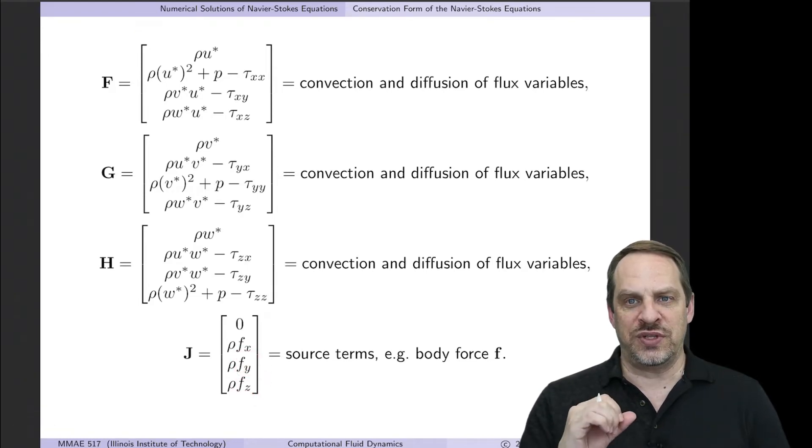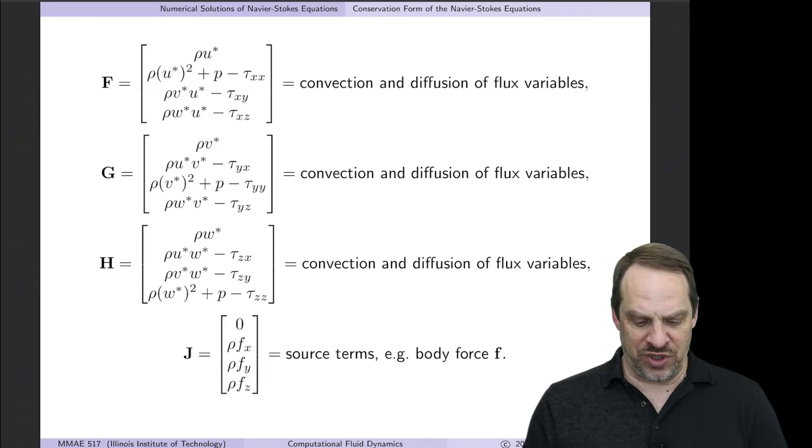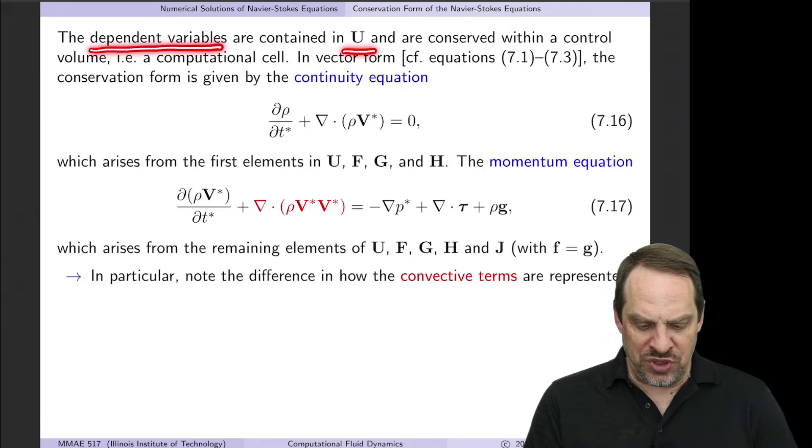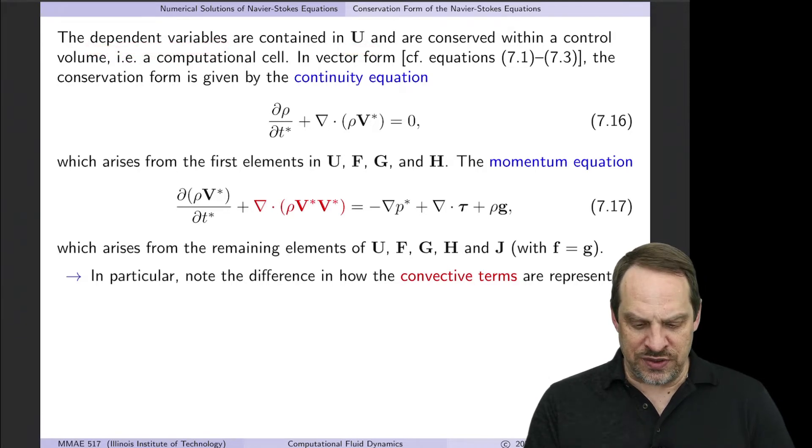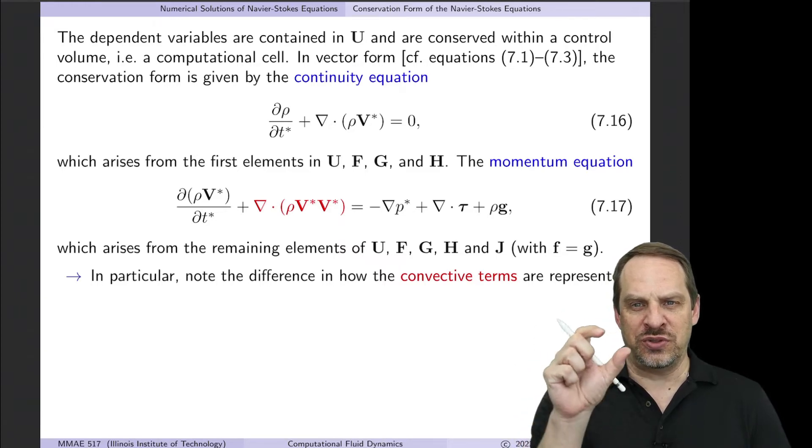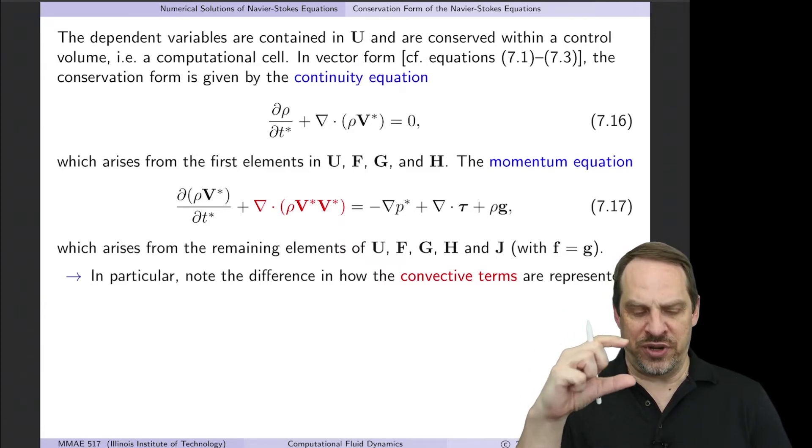So if we were to write those down, the continuity and then the momentum equations in our usual vector form, they would look like this. So remember, all the dependent variables show up in U, and those are the quantities that are being conserved within a little control volume. The control volume corresponds to a little cell in our grid.